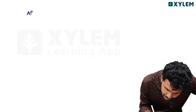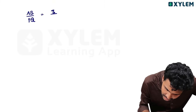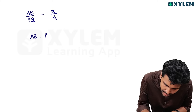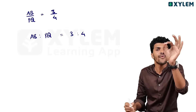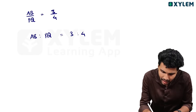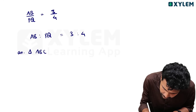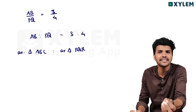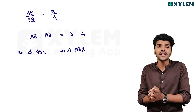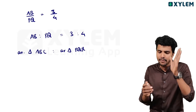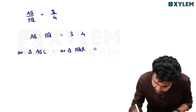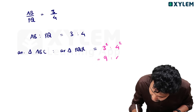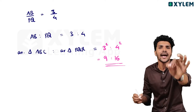Now, AB over PQ is 3 over 4. That is the side ratio. The area of triangle ABC to the area of triangle PQR equals 3 squared to 4 squared, which is 9 to 16.